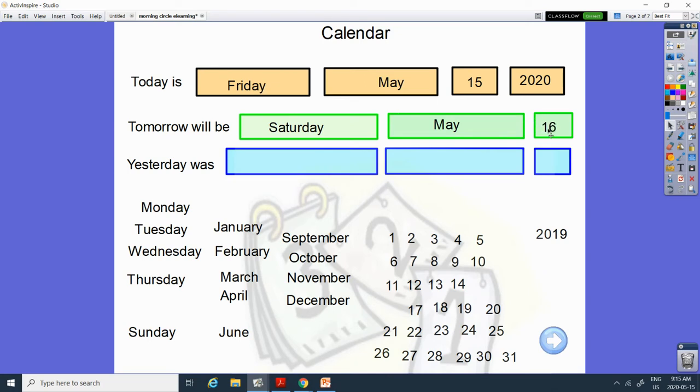And yesterday was Thursday. Monday, Tuesday, Wednesday, Thursday. And it was May. And what number comes before 15? 14.